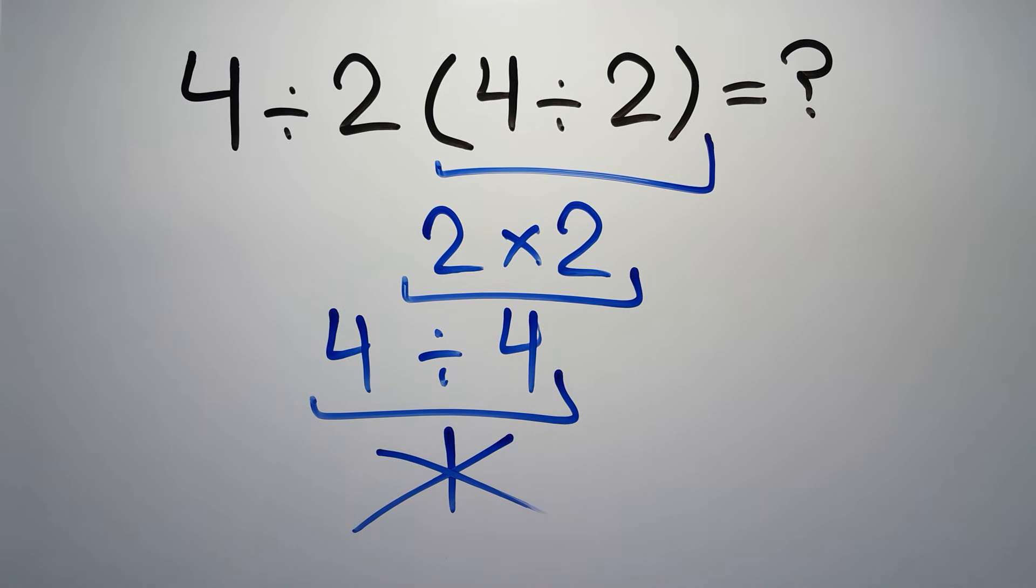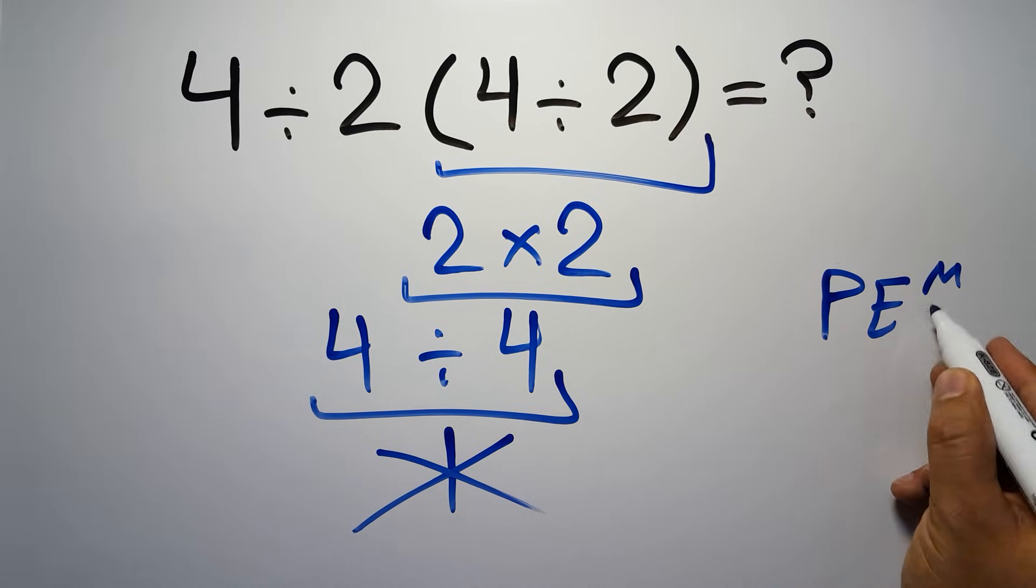Because according to the order of operations, first we have to do parentheses, then exponents, then multiplication or division, and finally addition or subtraction.